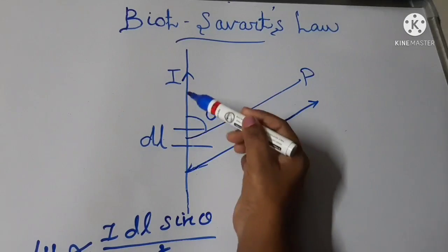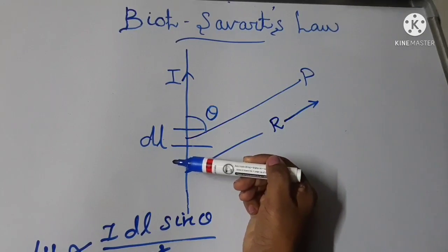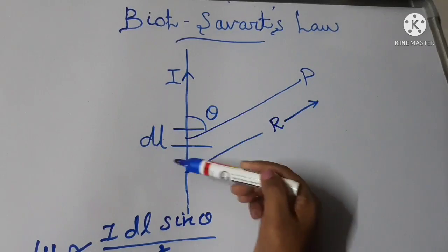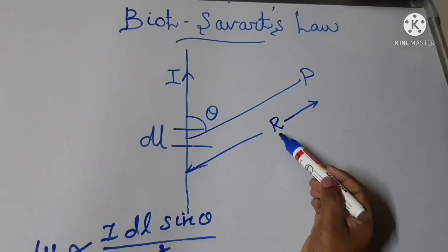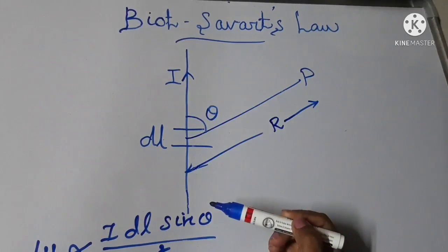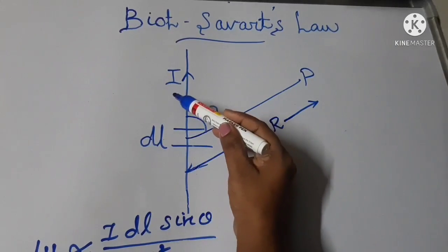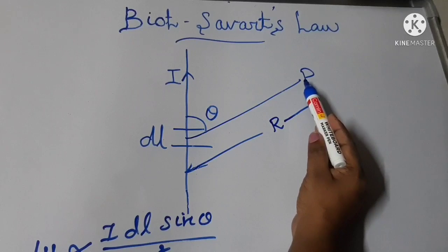This is the figure of current element IDL. We fix one point P from the current element IDL. R is the distance between the point P and the current element. Theta is the angle between the current element IDL and the point of interest P.